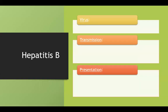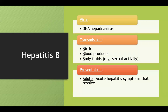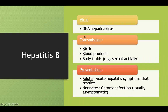Hepatitis B is caused by a DNA hepatitis virus. The classic transmission patterns are all the Bs: birth, blood products, and bodily fluids through sexual activity. In adults, it usually resolves with acute hepatitis symptoms. In neonates, it's more often chronic and usually asymptomatic. Since birth is a risk factor, we check for hepatitis B in prenatal screening and vaccinate early.